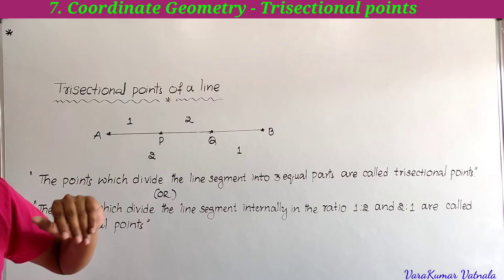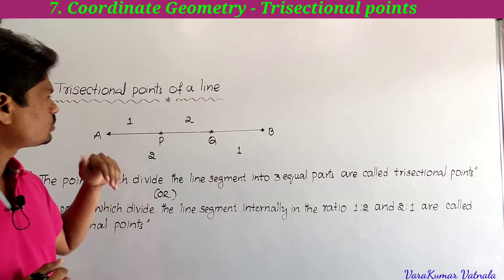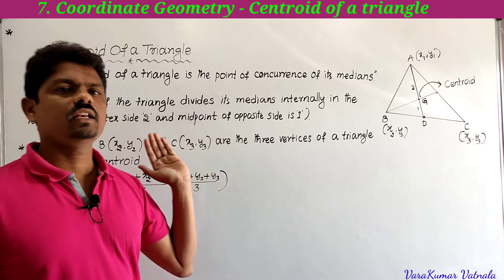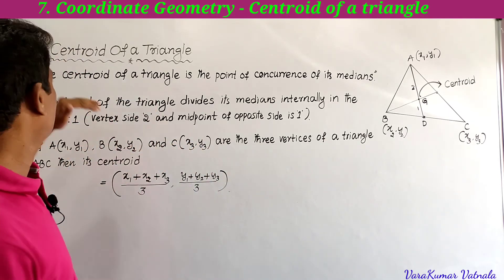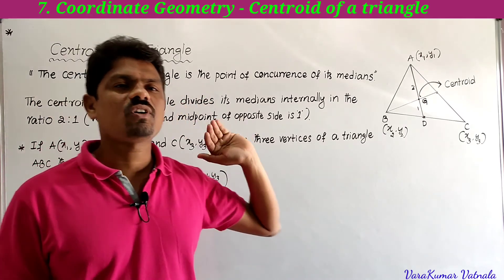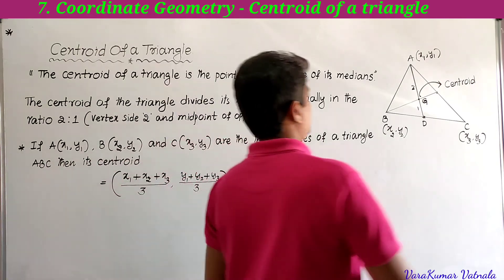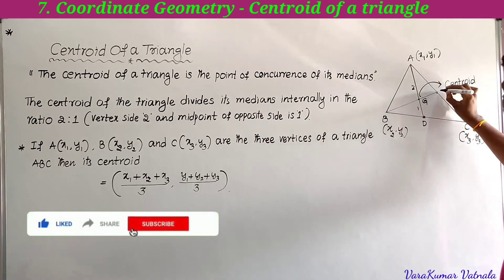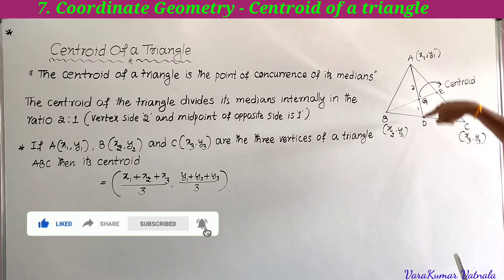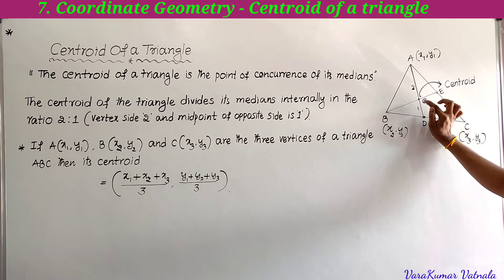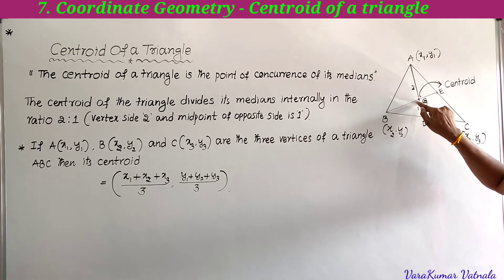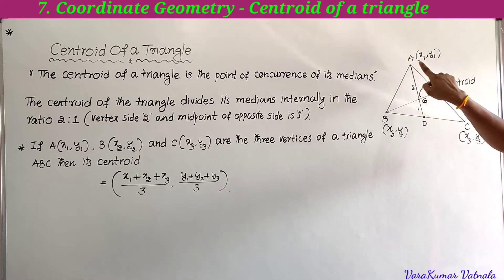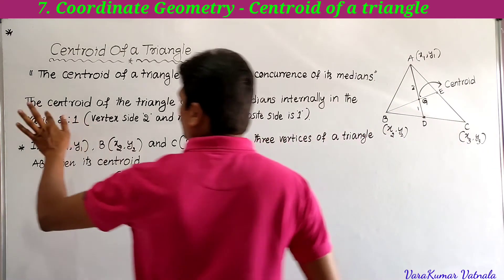This is about trisectional points — also very, very important. Next, we have to learn about the centroid of a triangle. The centroid of a triangle is the point of concurrence of its medians. Here, ABC is a triangle, and AD and BE are the medians. The point of concurrence of the medians is called the centroid.